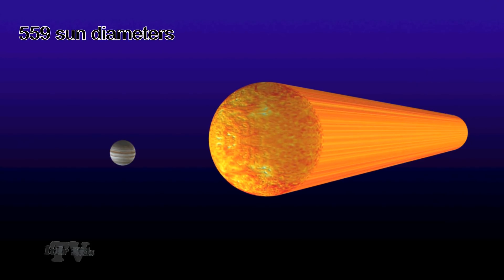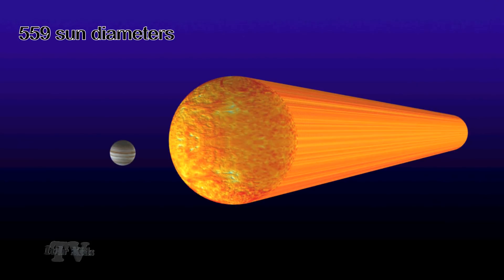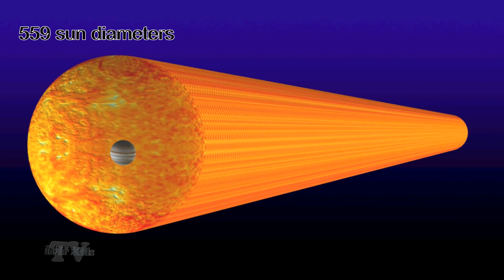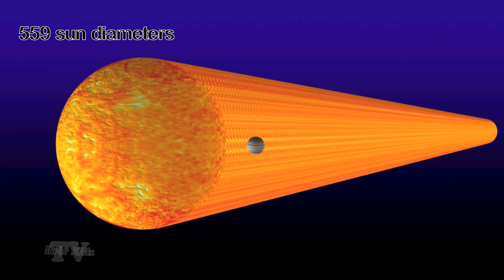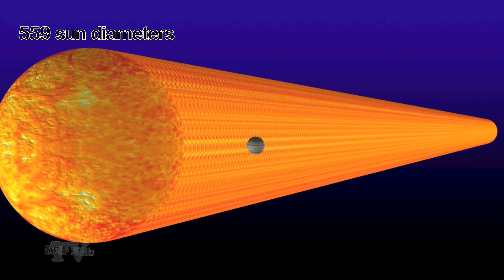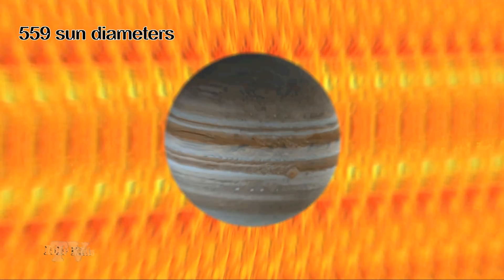The distance from the Sun to Jupiter is 559 diameters of the Sun.